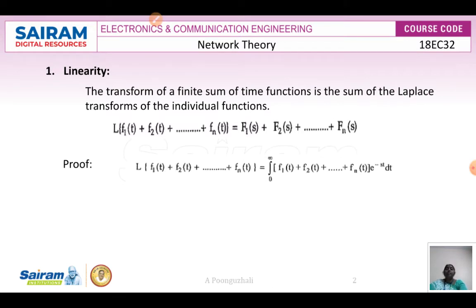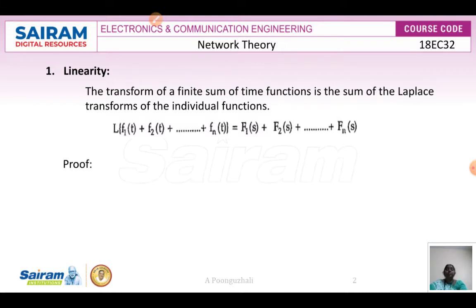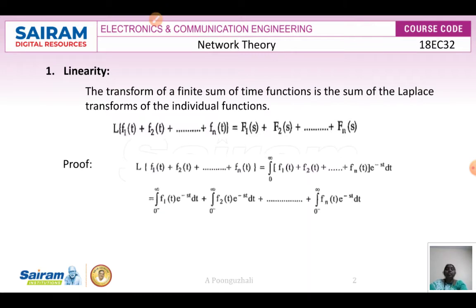Now we derive this. The general expression for the Laplace transform is the integral from 0 to infinity of f(t) times e^(-st) dt. Here f(t) is f1(t) + f2(t) + ... + fn(t). Multiplying by e^(-st) and separating, we get the integral from 0 to infinity of f1(t)e^(-st) dt plus the integral from 0 to infinity of f2(t)e^(-st) dt, and so on for the separate functions.